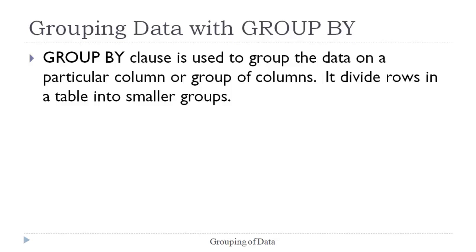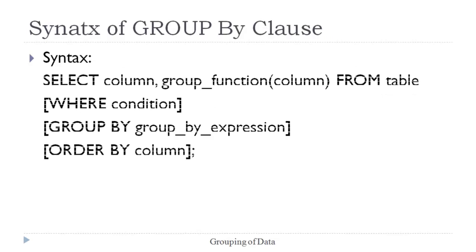GROUP BY is used to make a group on a particular column or group of columns. It divides the rows in a table into smaller groups. The syntax of GROUP BY clause is: SELECT column, group_function FROM table, with an optional WHERE clause, optional GROUP BY expression, and optional ORDER BY. In GROUP BY, we supply a GROUP BY expression to make a grouping on a particular column.